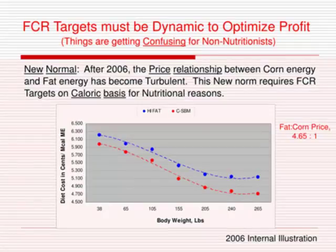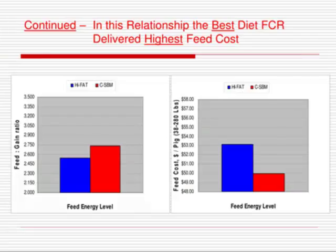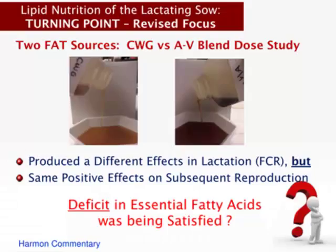When the fat-to-corn price ratio was below 3:1, knowing the net energy ratio is close to 3:1, you'd clearly save money using fat. Going through all growth phases with 80 lbs of fat per ton, the cents per Mcal of effective ME for the fat diet was lower than corn-soy — that's how it used to be. Now with high fat prices, the fat diet costs more per Mcal at every body weight, so you can still be a world champion in feed conversion feeding high fat, but it'll cost you $2.00–$2.50–$3.00 per pig.